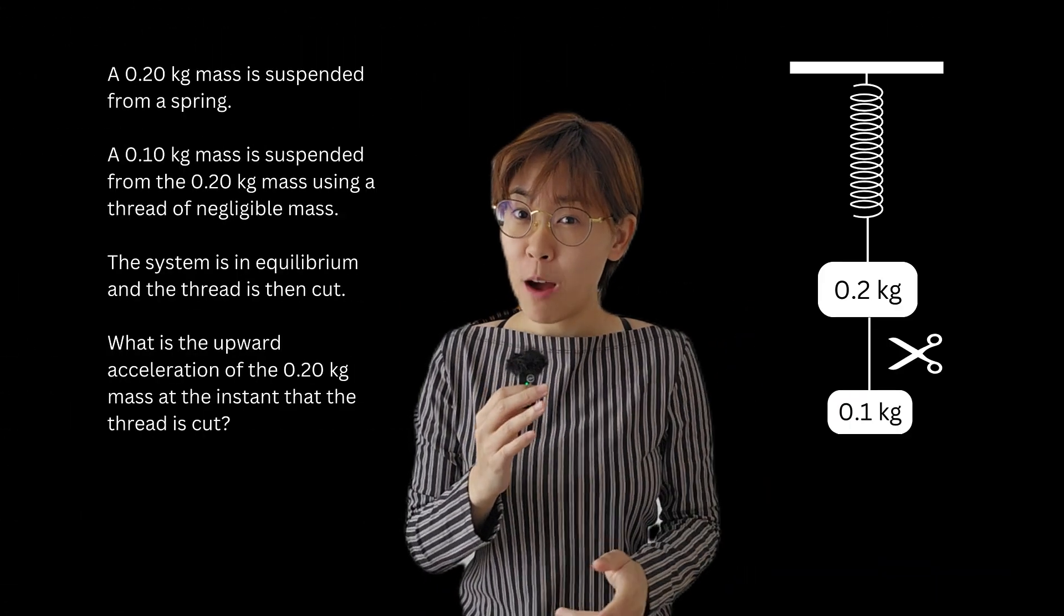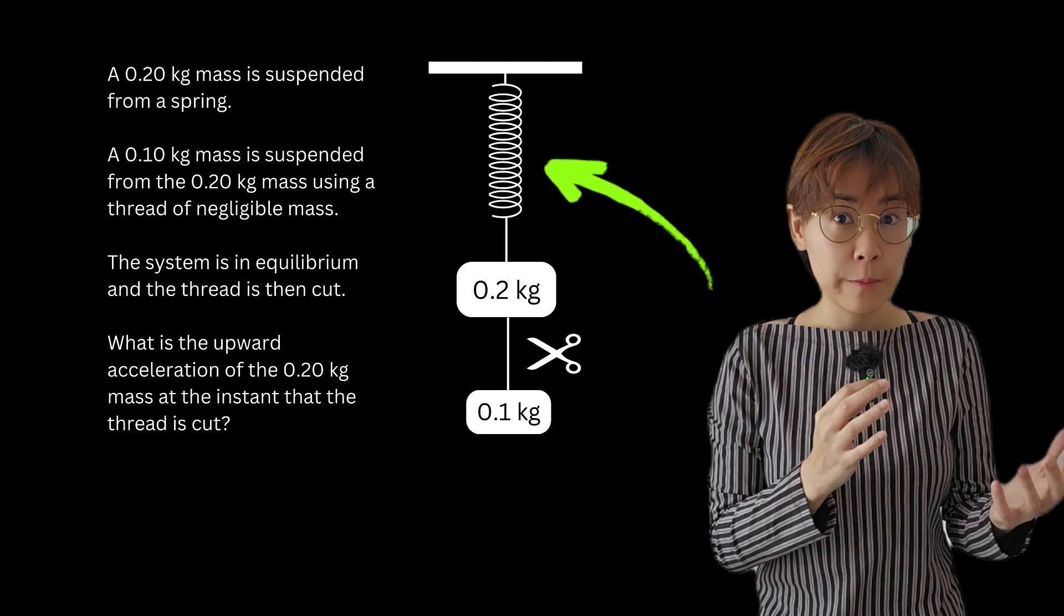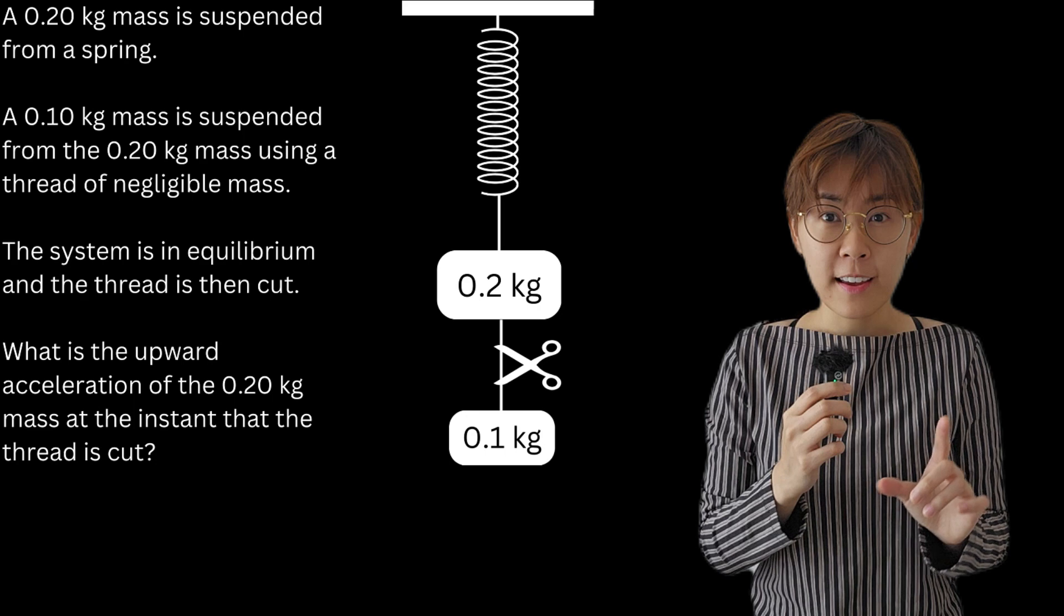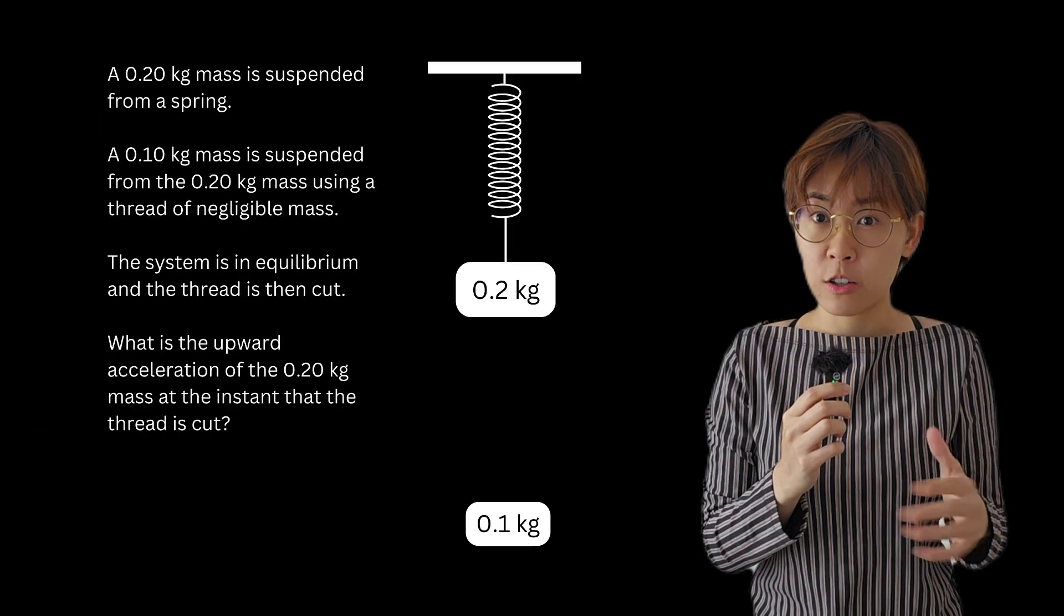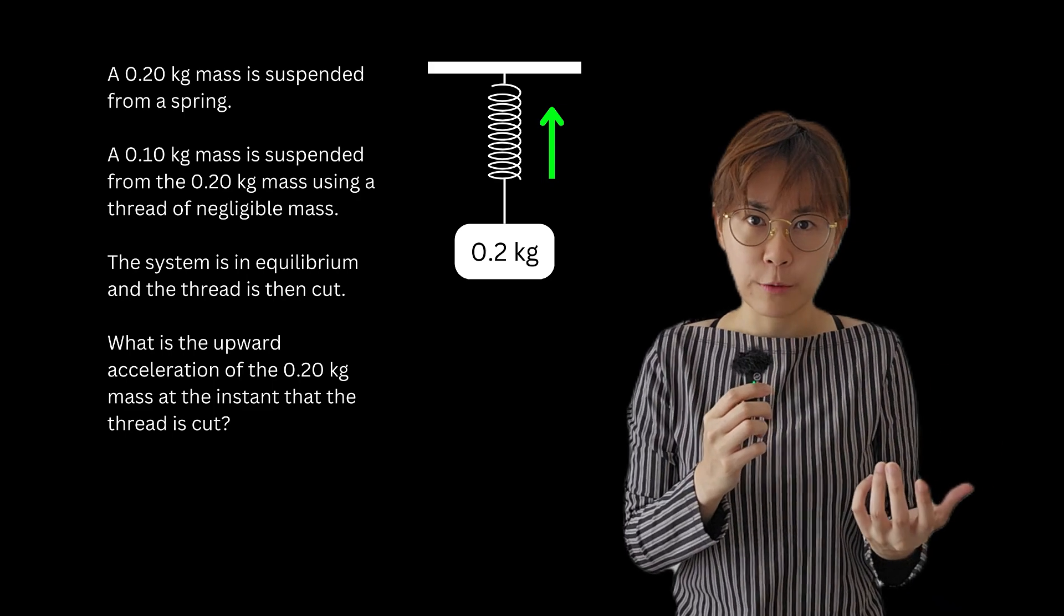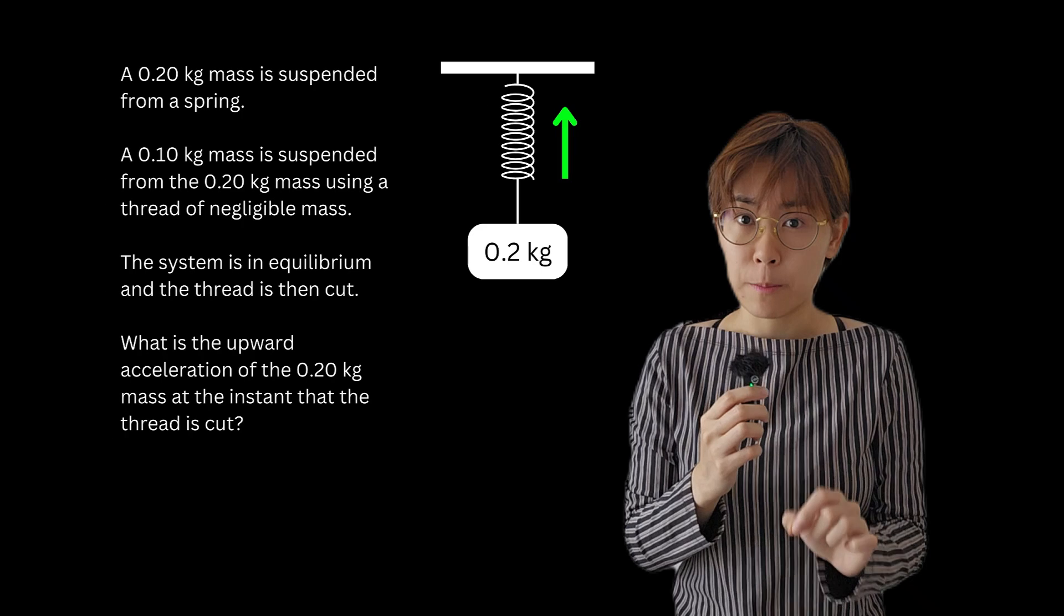Let's break down this mass-spring system problem together. We've got two masses hanging from a spring, and the whole setup is in equilibrium. But when the thread is cut, the 0.2 kilogram mass starts accelerating upwards. Realizing it's an upward acceleration is the key idea, and I'm going to explain why in just a bit.